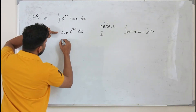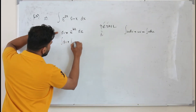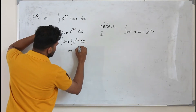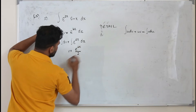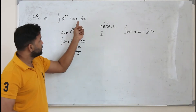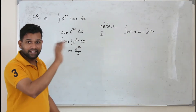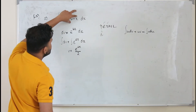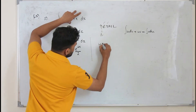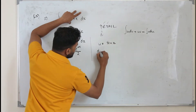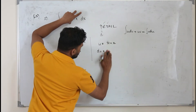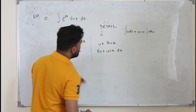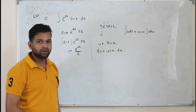To find V, integrate both sides: integral dV equals integral e to the power 2x dx, so V equals e to the power 2x over 2. You don't need to put plus c here; add it at the end. The remaining function sin x is taken as u, so du equals cos x dx.